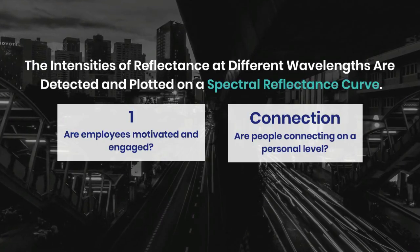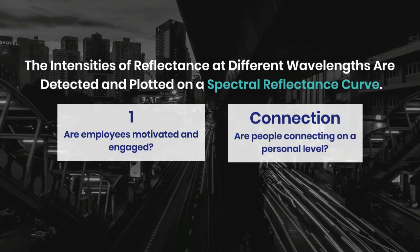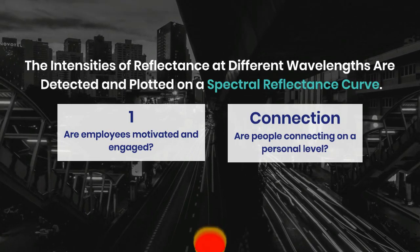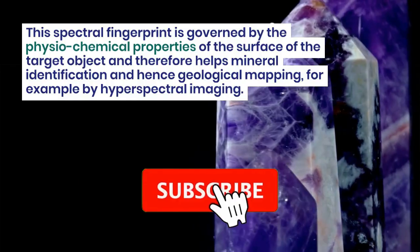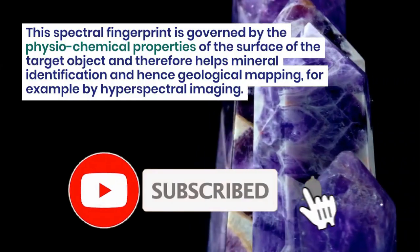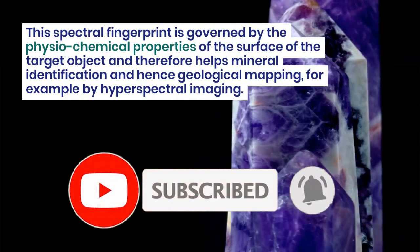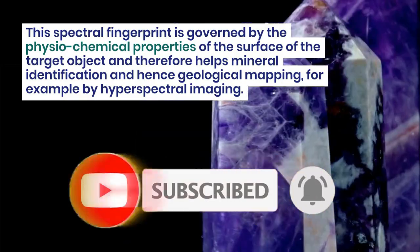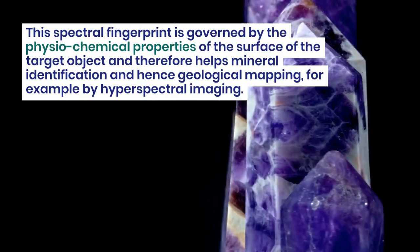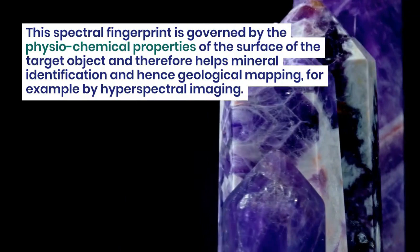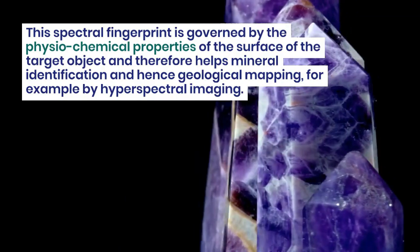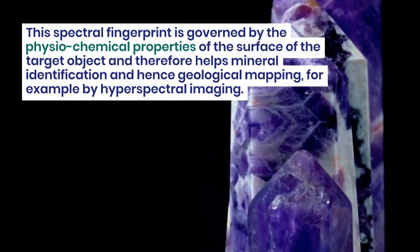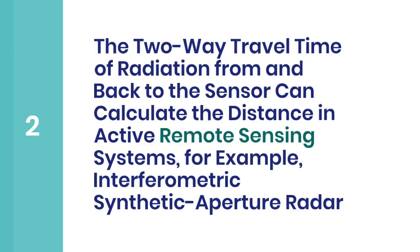The intensities of reflectance at different wavelengths are detected and plotted on a spectral reflectance curve. This spectral fingerprint is governed by the physiochemical properties of the surface of the target object and therefore helps mineral identification and hence geological mapping, for example by hyperspectral imaging.